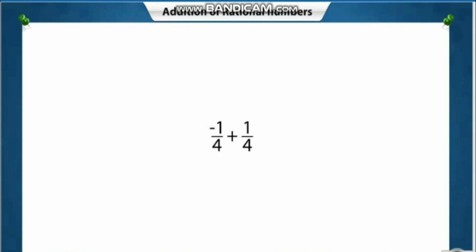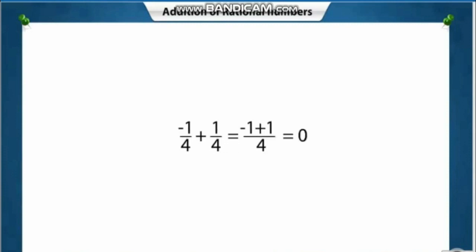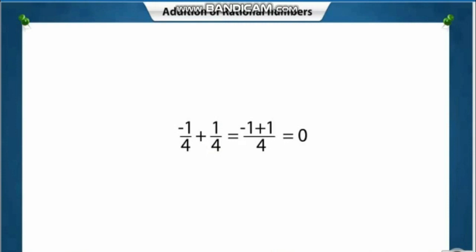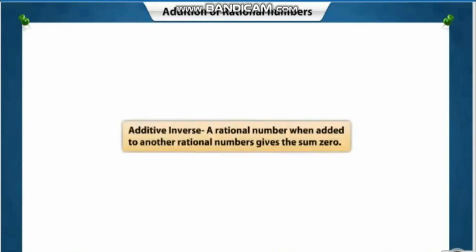Can you find the sum of minus 1 by 4 and 1 by 4? The answer is 0. Here, 1 by 4 is the additive inverse of minus 1 by 4, and vice versa. The additive inverse of a rational number is a rational number which, when added to the original rational number, gives the sum 0.